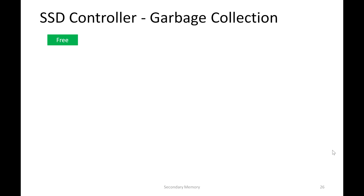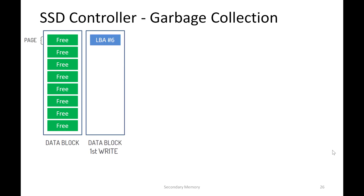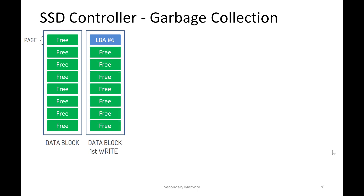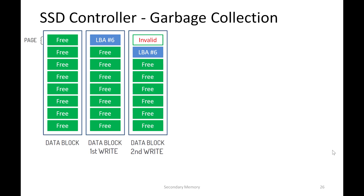Let's look at a couple of examples of how garbage collection works. Say we have a page and a set of 8 such pages forming our data block. The host sends the first write, and the SSD controller picks the first page of this block and maps the logical block address — say address 6 — to this physical page. The remaining pages continue in the free state. Now, the host sends a second write to the same page. Because we cannot overwrite the first page, the SSD controller picks the second free page and writes the data there. The first page becomes invalid and the remaining pages stay free.